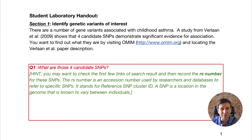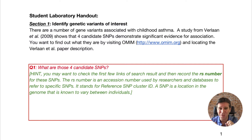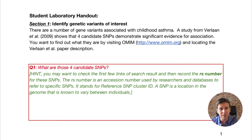OMIM was originally a big collection of thick books that went around to clinicians and folks interested in human genetics and genetic diseases. Now, of course, it's a database at a web resource. We're going to use it to explore something about asthma - childhood asthma - and a particular paper that I found that I really like. If you're interested in some other disease or genetic condition that affects humans, you can substitute that in for childhood asthma and follow the same procedure to investigate the genetic basis.